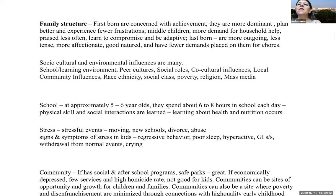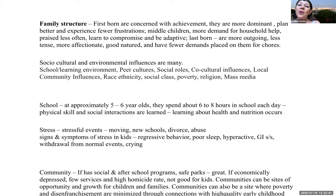Family structure and birth order — note this is very generalized. Firstborn children tend to be concerned with achievement, are more dominant, plan better, and experience fewer frustrations. Middle children have more demand for household help, are praised less often, but learn to compromise and be more adaptive. The last born or baby of the family tends to be more outgoing, less tense, more affectionate, good-natured, and has fewer demands placed on them for chores.